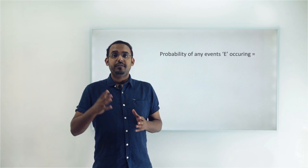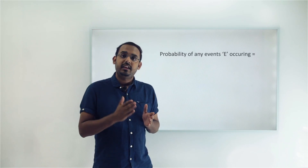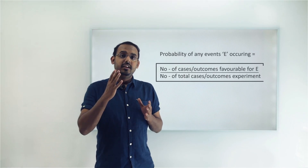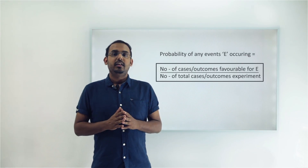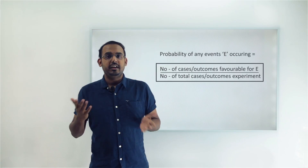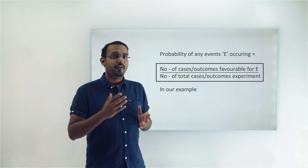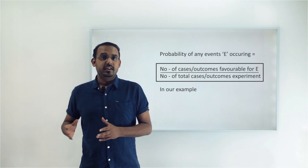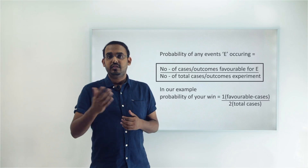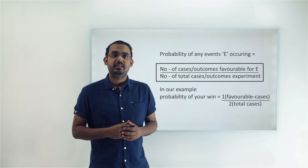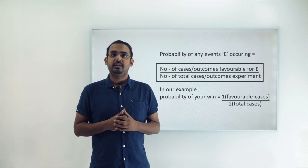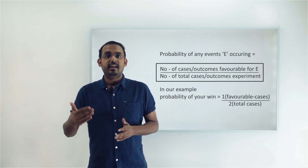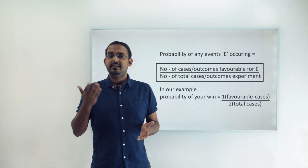This is exactly what the theory of probability tells us. According to theoretical probability, the probability of an event E occurring is given by the ratio of the total number of events favorable to E to the total number of events associated with the experiment. In our scenario, the number of favorable events for winning are 3 and the total outcomes when rolling a dice are 6, giving a probability of 3 by 6 — the same as we figured out.